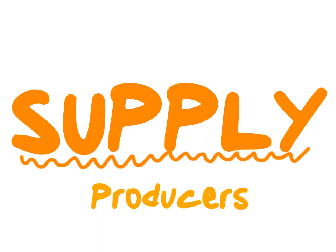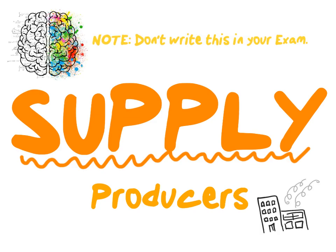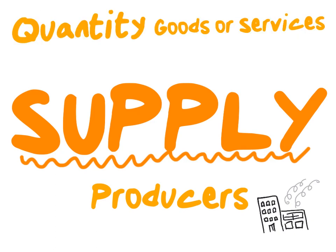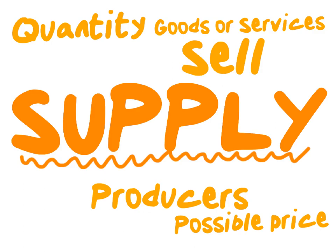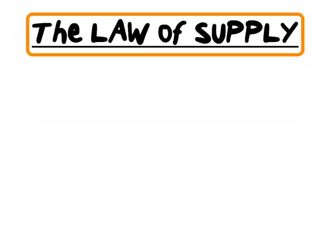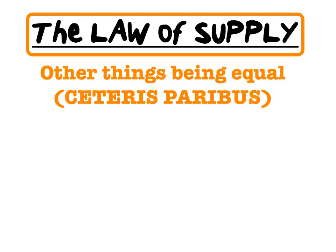When we talk about supply we are talking about the producers in the economy. In order to explain supply in an easy way, consider the following explanation, but please note do not write this down in your exam. Supply is linked to our producers. Our producers are the suppliers of goods and services in the economy. Producers are greedy, meaning they will only increase supply if they can increase the price of the product. Supply can be defined as the quantity of goods or services that producers plan to sell at each possible price during a certain period.